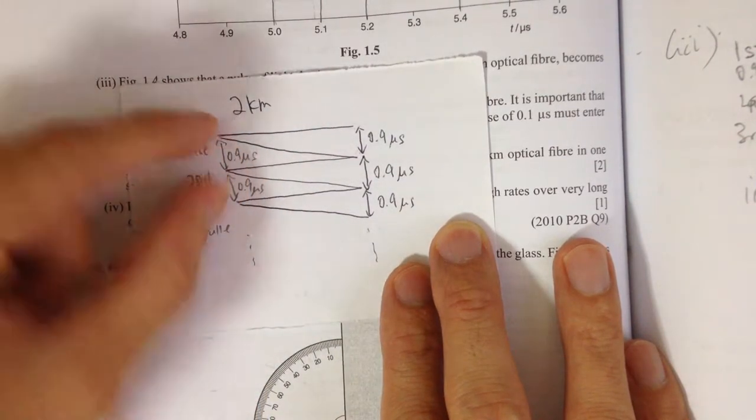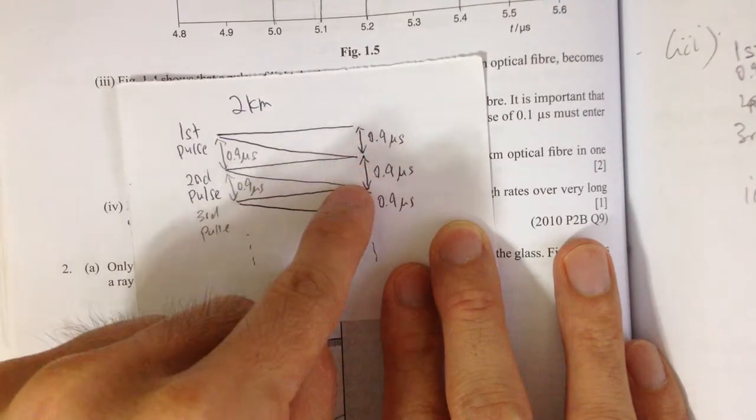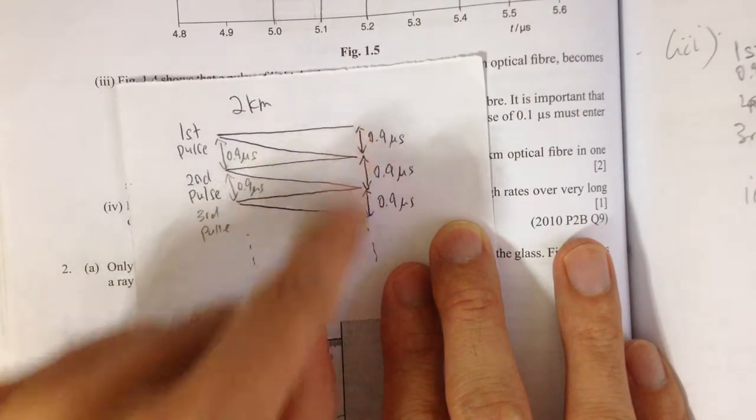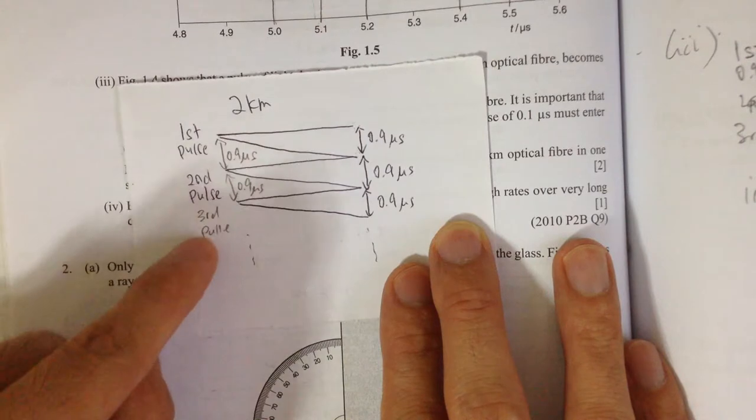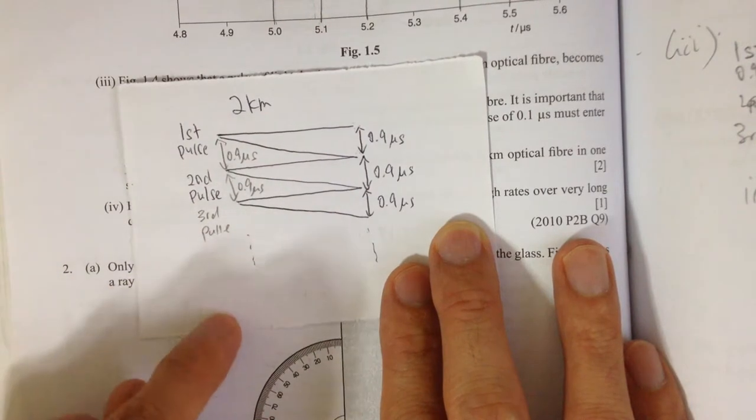This is to ensure that when it comes out, this second pulse will not overlap the first pulse, and so on and so forth for the third pulse and so on and so forth.